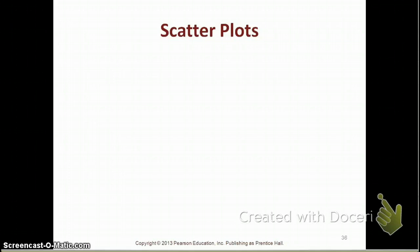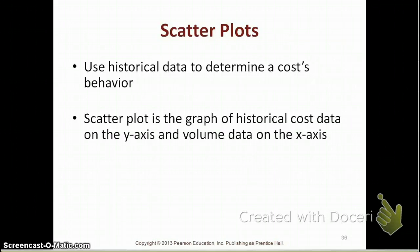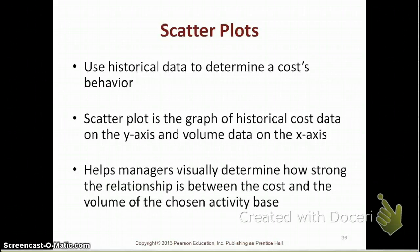Next, we're going to talk about scatterplots. Scatterplots are simply where you use historical data to determine a cost behavior. You use historical data, probably for several months, and you scatterplot it on a graph where you put cost data on the y-axis and volume data on the x-axis. What scatterplots do is help managers visually figure out whether there's a strong relationship between the cost and the volume of the chosen activity base.